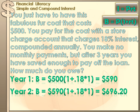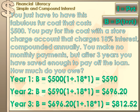In year two it's the same formula, except now you don't owe $500 — you've got to pay interest on the interest you've already accrued, so your new principal is $590. Multiply $590 × (1 + 0.18) × 1, which totals $696.20. In year three the same routine applies: at the beginning of year three you owed $696.20, and at the end of year three you add another year of interest at 0.18. After three years, you would owe $812.52 on that $500 coat — that interest is over half the value of the coat.